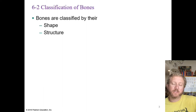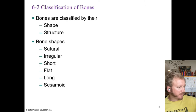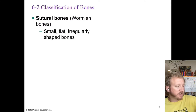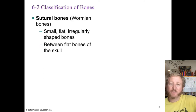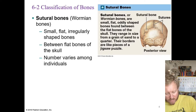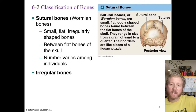When looking at shape, there are a number of different categories: sutural, irregular, short, flat, long, and sesamoid. Sutural bones, also known as Wormian bones, are small, flat, irregularly shaped bones typically found between the different sutures of the skull. The number of these varies between individuals.